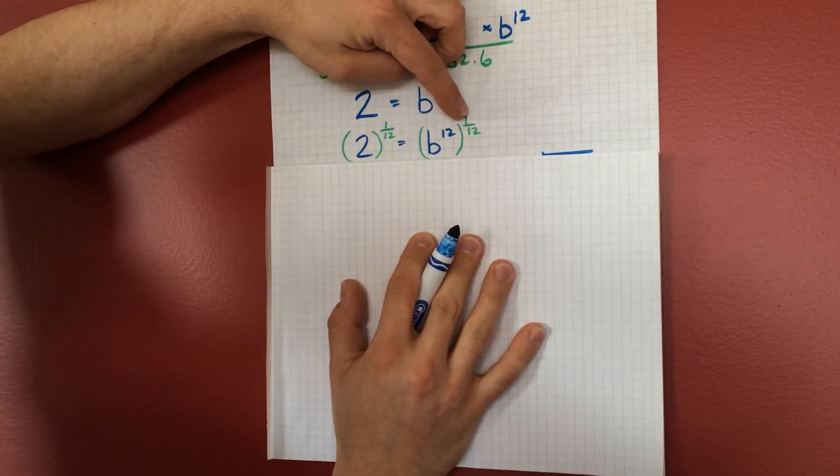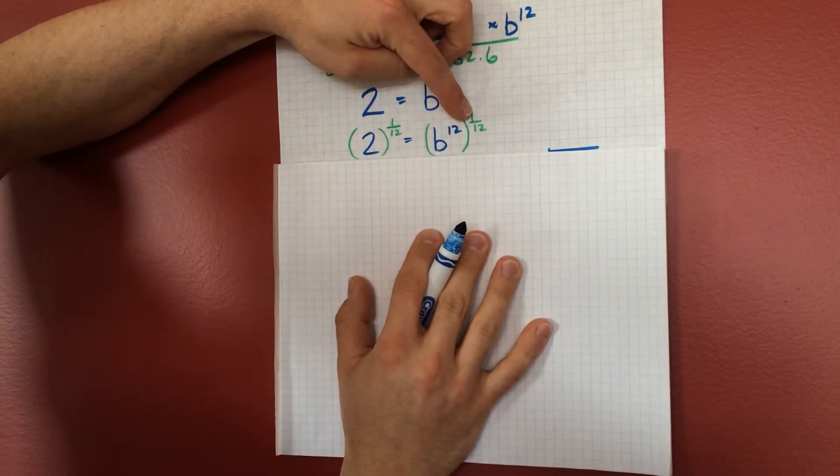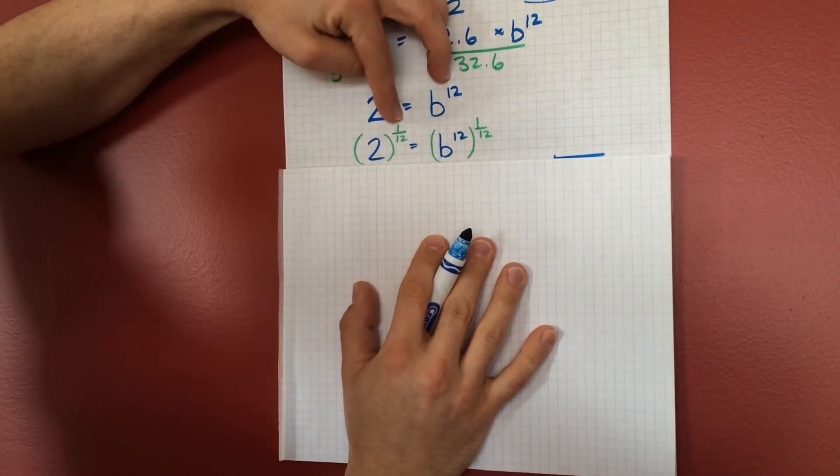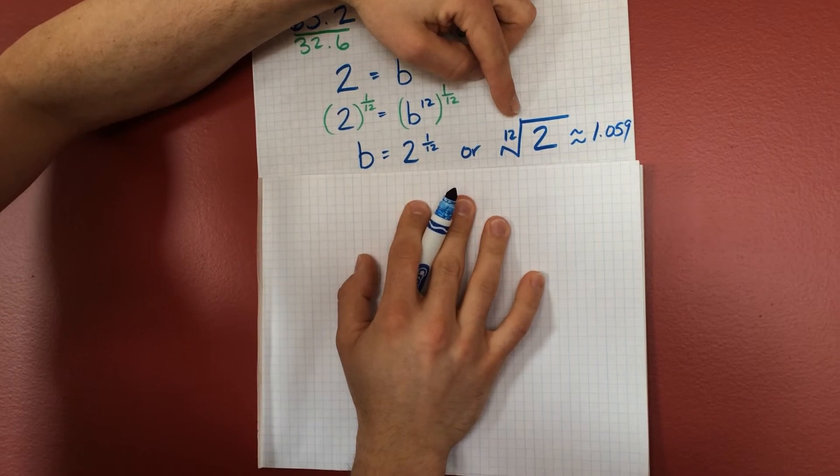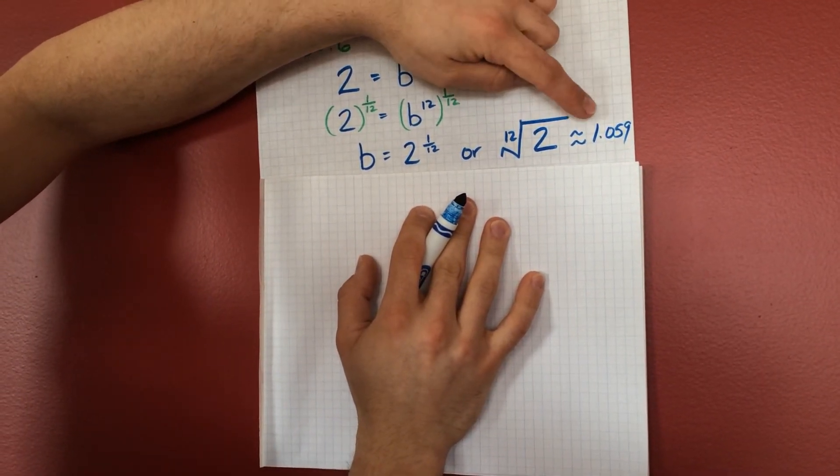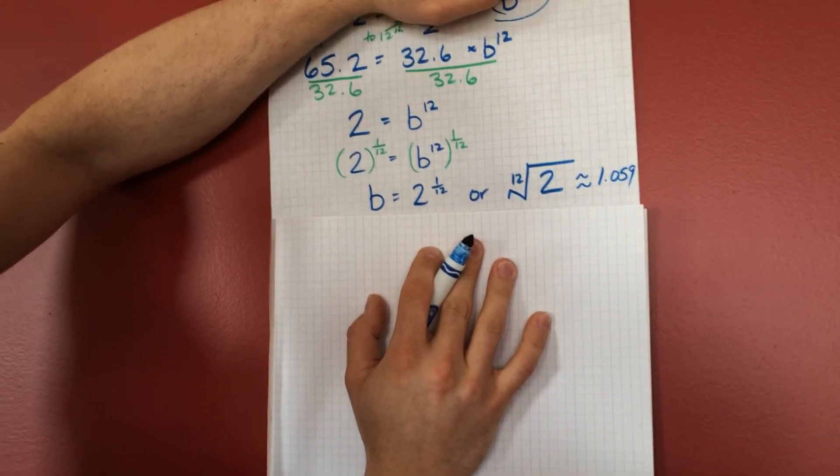This side, 12 times 1/12th will be 1. That's from our exponent laws. This will leave us with b. And on this side, I have 2 to the 1/12th. Or, we can call that the 12th root of 2. That's definitely calculator worthy. And it's about 1.059.